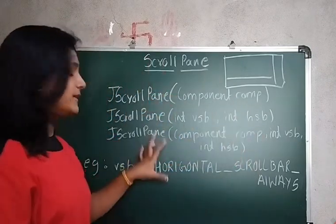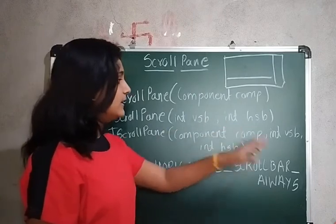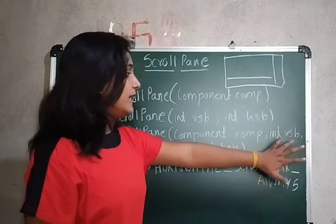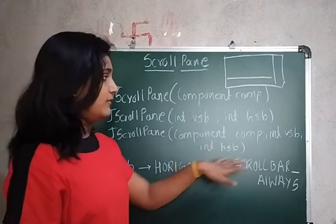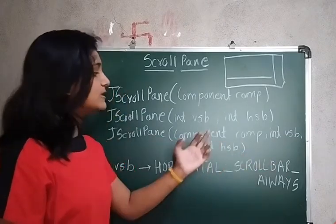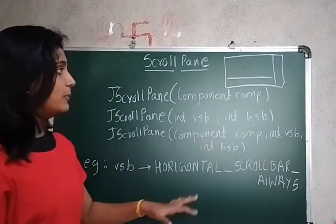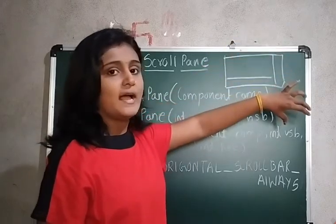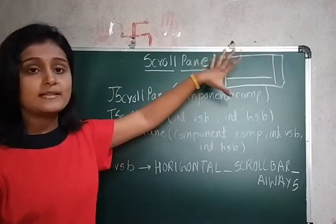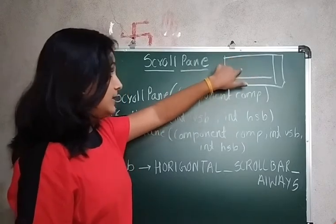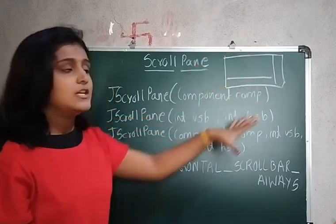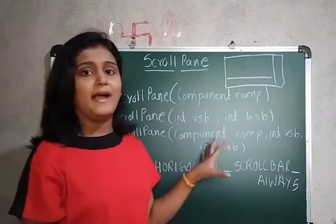The third constructor takes a component and an integer constant. You pass the component you want to place on the ScrollPane, then pass the constant for whether you want a vertical or horizontal scrollbar. This allows you to scroll through the area when there are many components and view them properly.